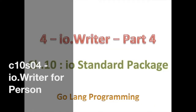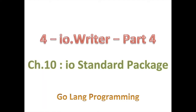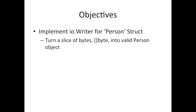Hello, good day and welcome back. This is going to be the last section in chapter 10, in which we're going to be talking about the io.Writer. In this example, we're going to close out this chapter with one more example, a little bit more complicated than what we've done so far. The intent is to implement the io.Writer for Person — before we didn't implement io.Writer for Person, we implemented it for other name types like the average age tracker.